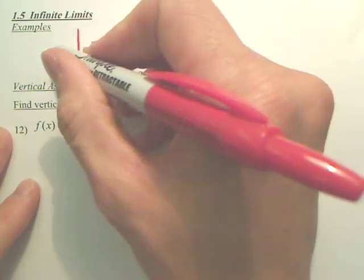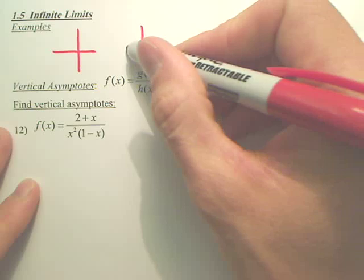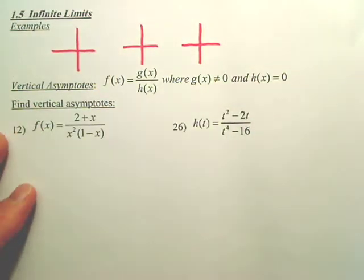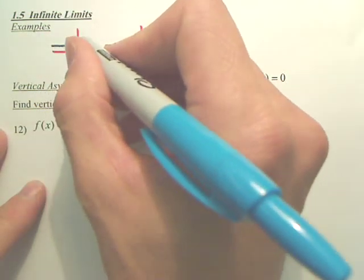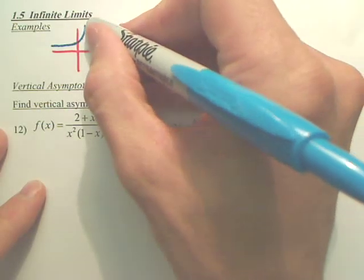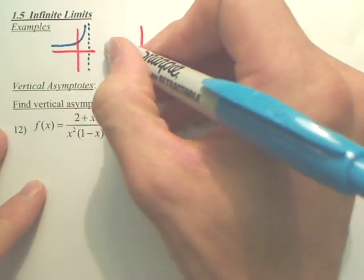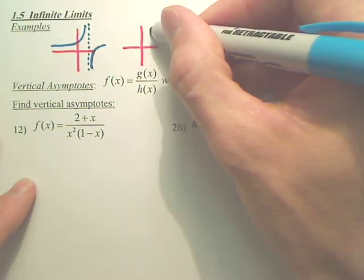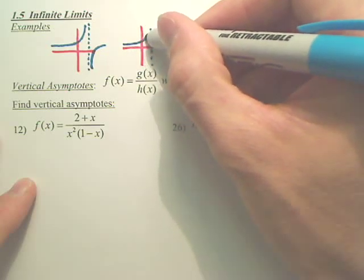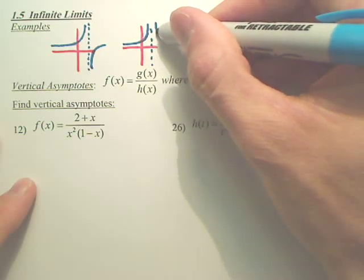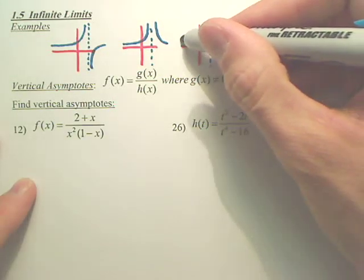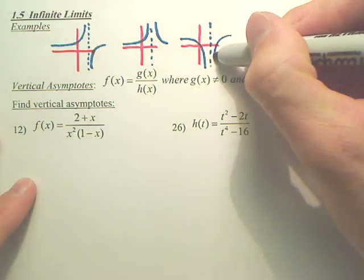So let's say we have a couple graphs here. Let's say you have a graph that looks like that and then you have an asymptote and then it looks like that. And then we have another graph that looks like that and then it looks like that. And then we have another graph that goes like this and then goes like this.